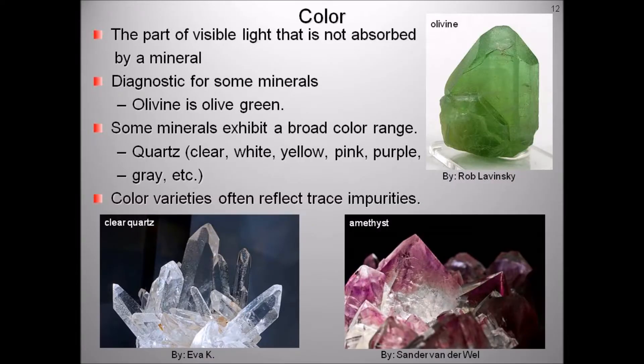The color of a mineral is its most noticeable property. For some minerals, it is a useful indicator. For example, olivine is named for its typically olive green color. Other minerals, like quartz, exhibit a broad range of colors due to trace metallic impurities within the quartz crystal lattice. A pure quartz is clear or translucent. If quartz contains two hundredths of one percent of iron in the matrix, then you have purple amethyst. Two one-thousandths of one percent of titanium in the matrix of quartz turns the colorless pure quartz to rose color.